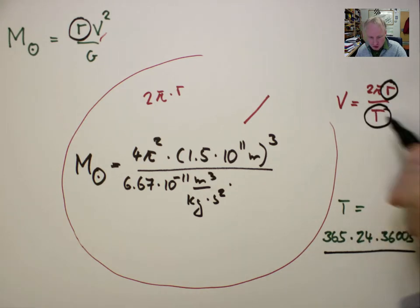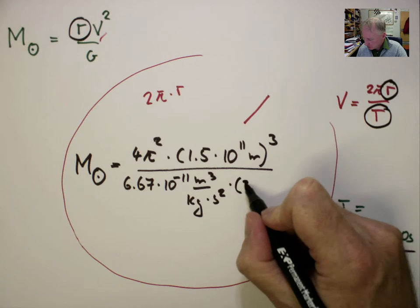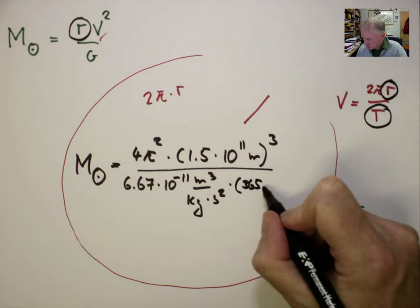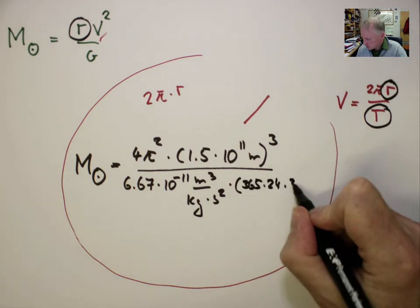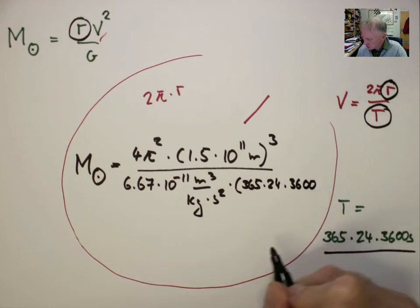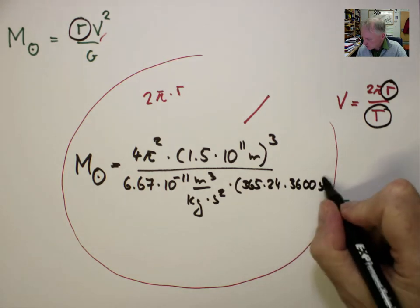Which goes in squared, we write 365 times 24 times 3600, 3600 seconds squared.